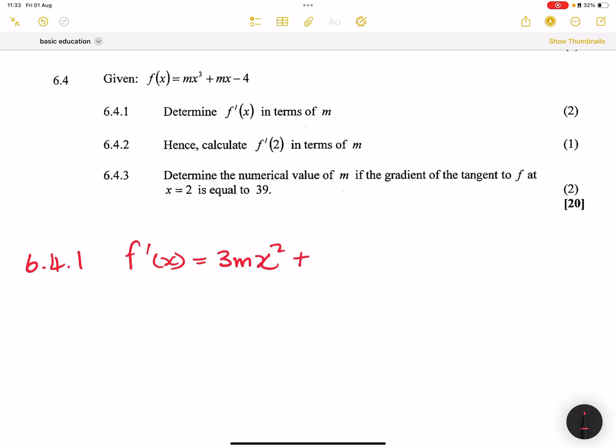They said hence calculate f'(2). So for 6.4.2, let me substitute 2 into our derivative equation. That's 3 times m times 2² plus m. This is going to be 3 times 4, that's 12m plus m, which gives me 13m. So f'(2) is equal to 13m.